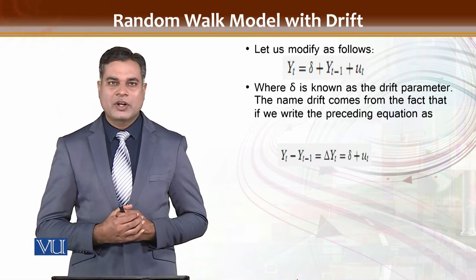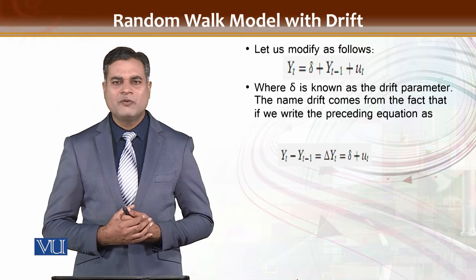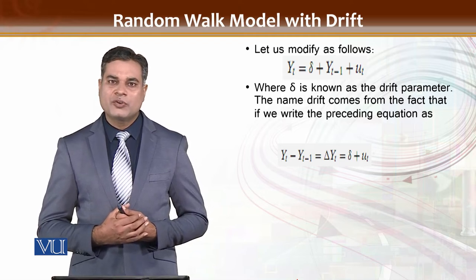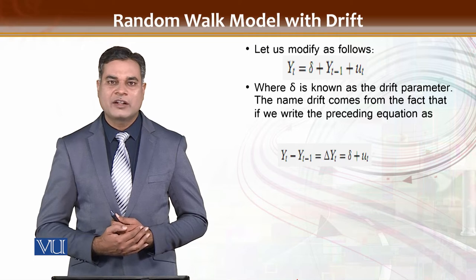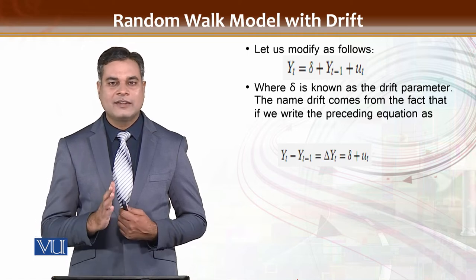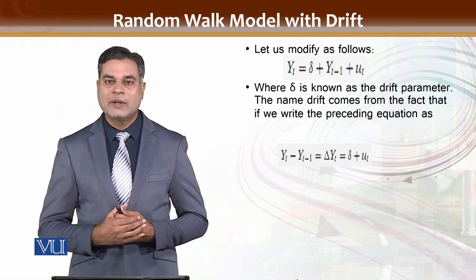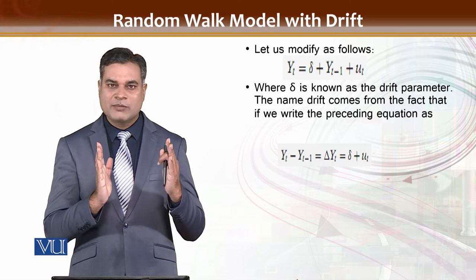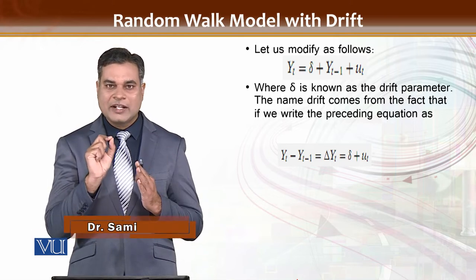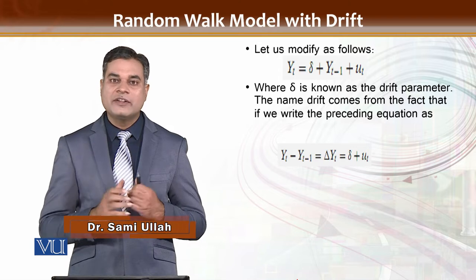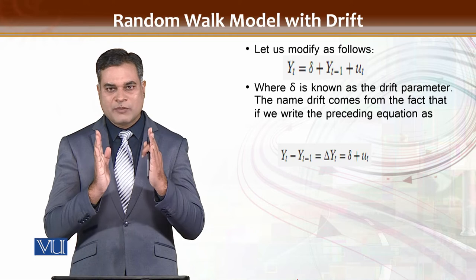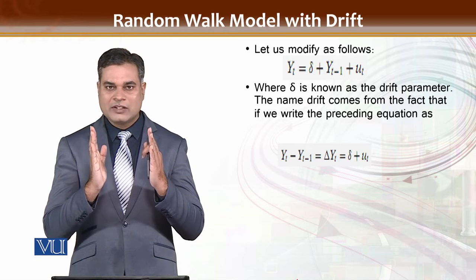If we have the consumption theory, consumption is a function of income. When we design a consumption model, we say c is equal to alpha plus beta times income plus the error term. There is one element of drift: alpha. Alpha is the drift, which is a constant. Drift generally means that some consumption changes with the passage of time.